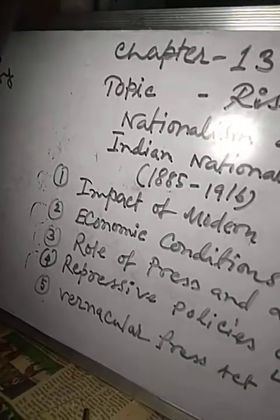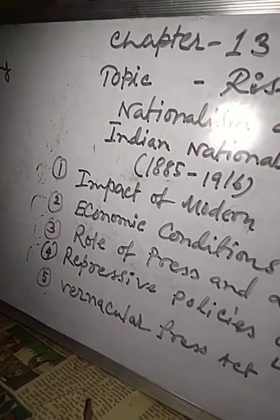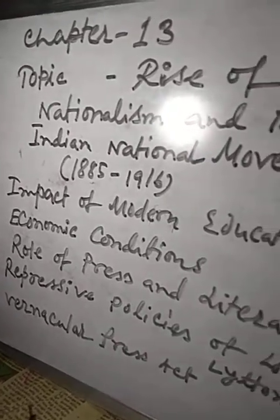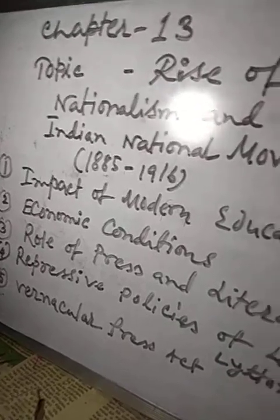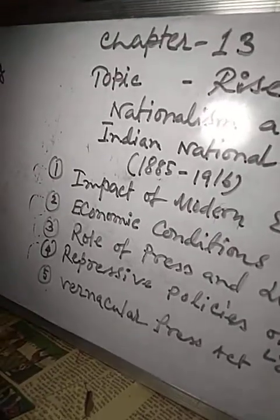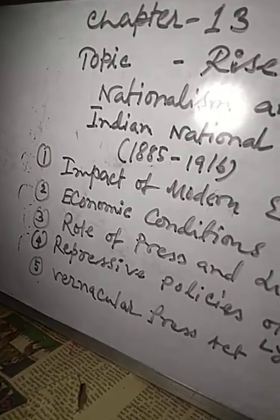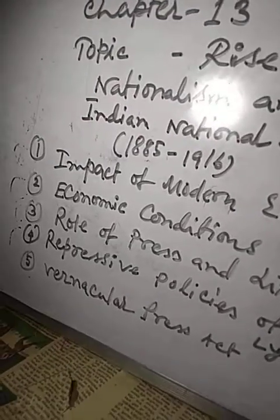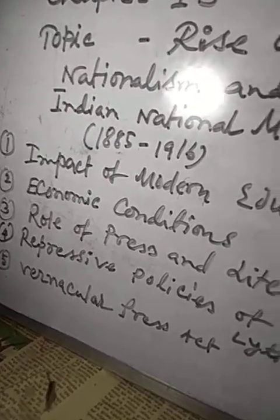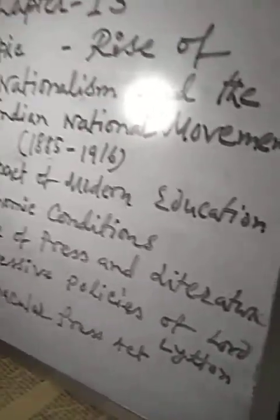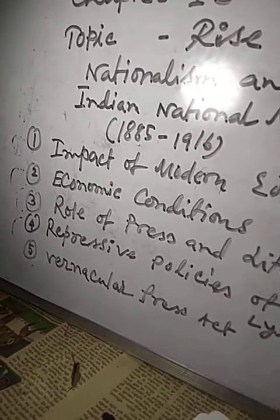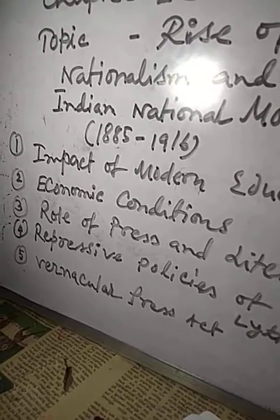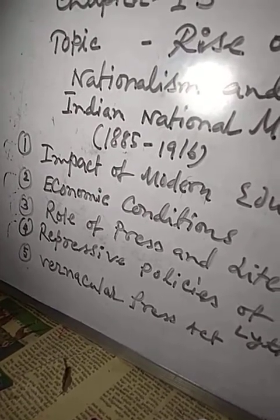Here are the points. Number one: impact of modern education. Number two: economic conditions. Number three: role of press and literature. Number four: repressive policies of Lord Lytton. And number five: Vernacular Press Act. So these are the five points.